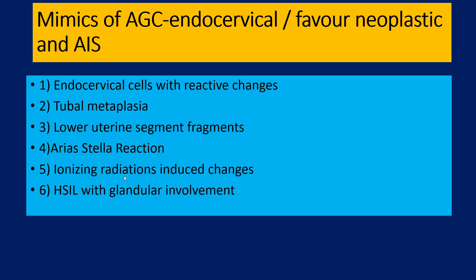Let's go to the next section: mimics of AGC endocervical favor neoplastic, AIS, and the lot. What are the mimics of atypical-looking glandular cells, whatever the exact terminology? So the mimics of atypical glandular cells endocervical, favor neoplastic, and endocervical adenocarcinoma in situ include: endocervical cells with reactive changes, tubal metaplasia, lower uterine segment fragments, Arias-Stella reaction, ionizing radiation-induced changes, and HSIL with glandular involvement.